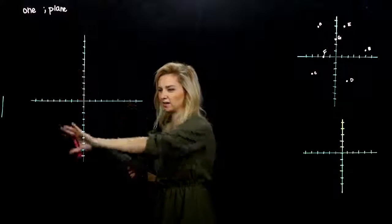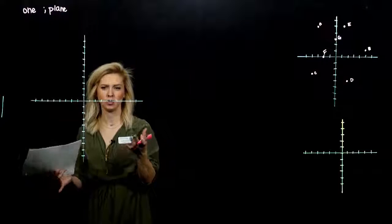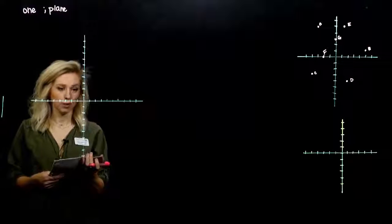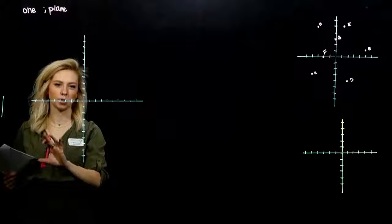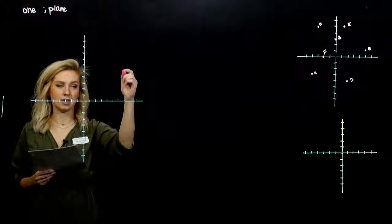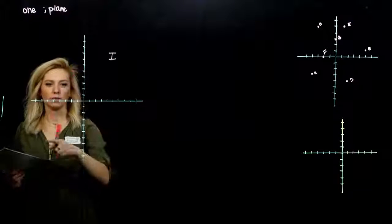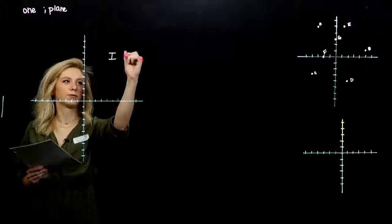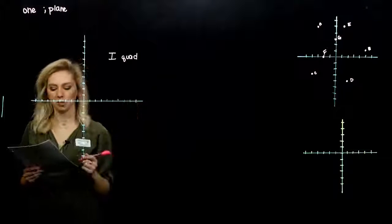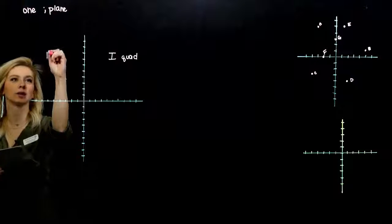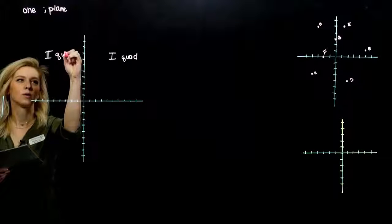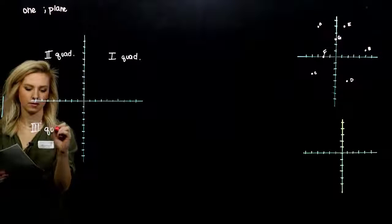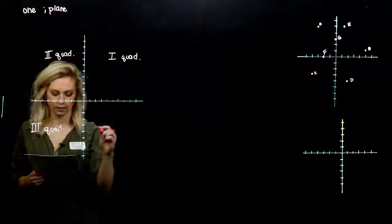Examining the plane again, we want to talk about the different pieces that are involved. Notice each of the four parts of a graph, they have names, and we label them one through four going counterclockwise. This is the first quadrant, upper right, upper left is the second quadrant, third quadrant down here, and fourth.